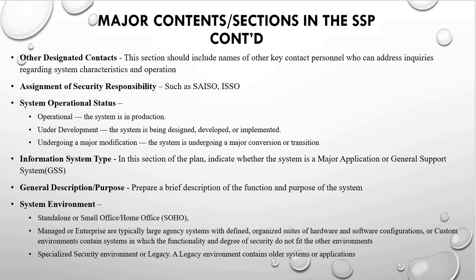Another major section is the information system type — this is where you indicate if the system is a major application or a general support system. Then we have the general description or purpose, which is a brief description of the function and purpose of the system. Under system environment, you indicate whether this is a standalone or small office environment, a major enterprise or large environment, or a legacy environment with old systems.